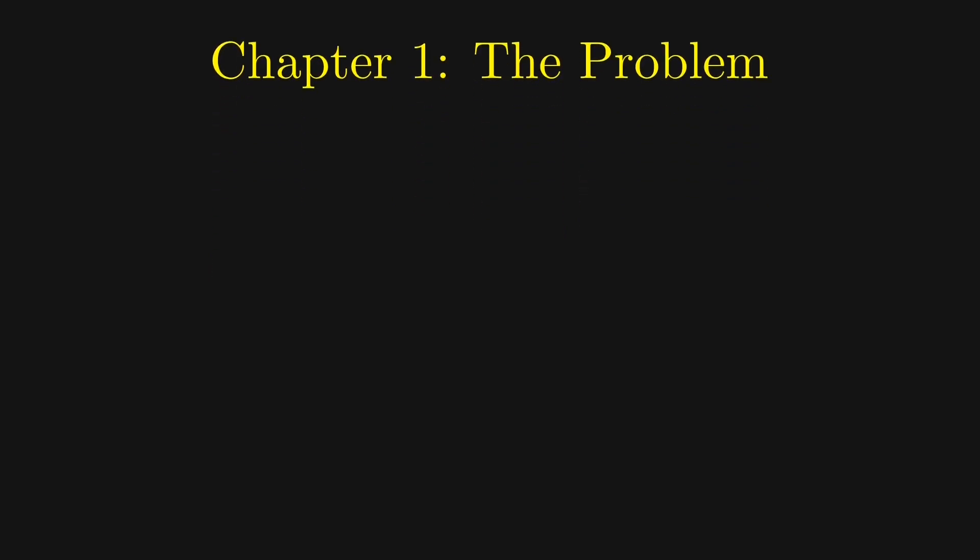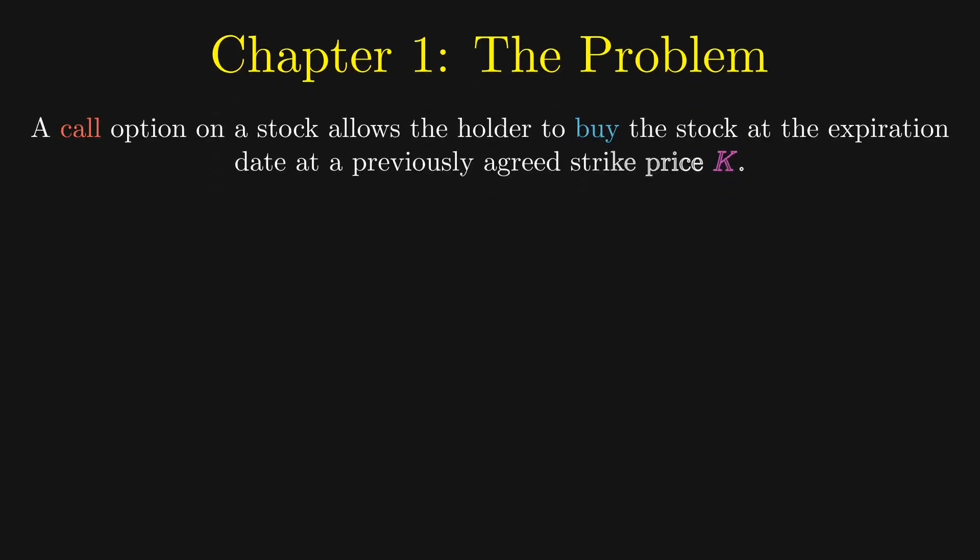First of all, what is an option? A call option on a stock allows the holder to buy the stock at the expiration date at a previously agreed strike price K. It's an option because the holder can choose whether to exercise it.